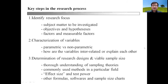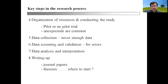What are the key steps in the research process? Number one is to identify research focus. Number two, characterize the variables. Number three, determine the appropriate research designs and viable sample size. Number four, organization of resources and conducting the study. Number five is data collection. Number six, screening of the collected data. Number seven, data analysis and interpretation. And lastly, writing up the research findings.